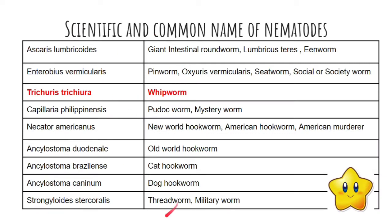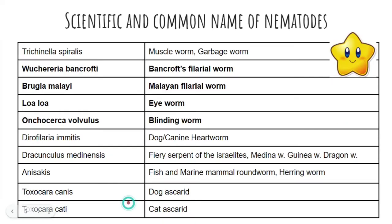So far, we are done with these nematodes. We are done with Ascaris as well as Enterobius, and don't forget the common name of Trichuris trichiura, which is the whipworm — this was a recall question in the board exam. We have also discussed Capillaria, our hookworms, Strongyloides stercoralis, and Trichinella spiralis, known as the muscle worm or the garbage worm.